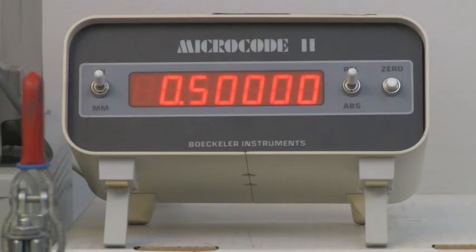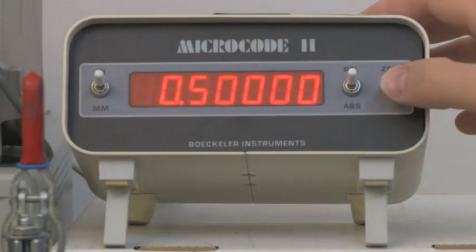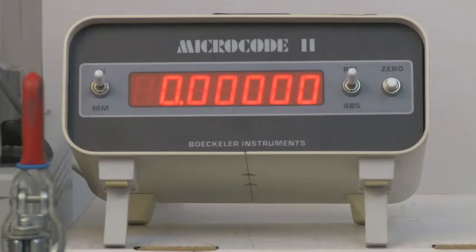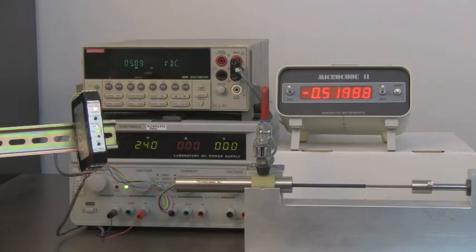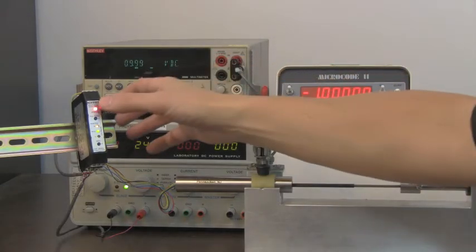We now reset the digital micrometer readout to zero. Next, we displace the LVDT by plus 1.0 inches. When the final position has been reached, we enter the full scale calibration point into the EasyCal by momentarily pressing the full scale push button.